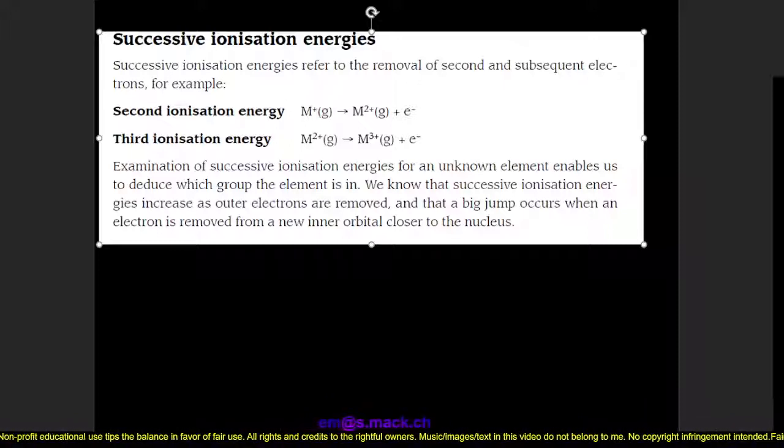We can write these successive ionization energies as equations which help us show which electron is being removed. For example, in second ionization energy, the equation shows us an electron being removed from an ion with a single positive charge to form an ion with a double positive charge. With third ionization energy, we see an electron being removed from an ion with a 2+ charge to form an ion with a 3+ charge.